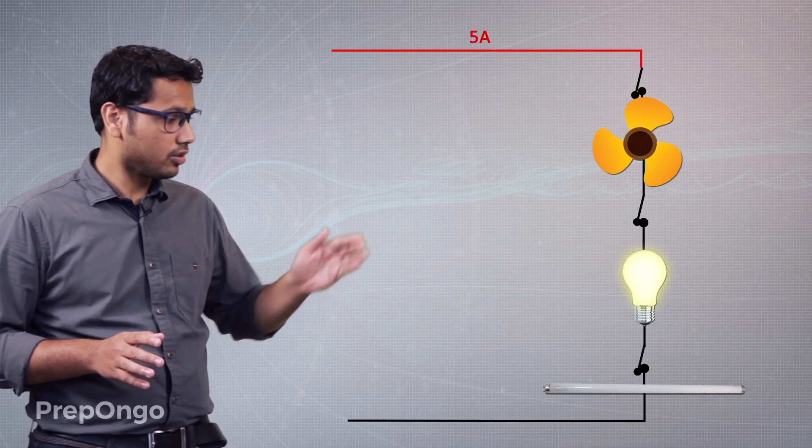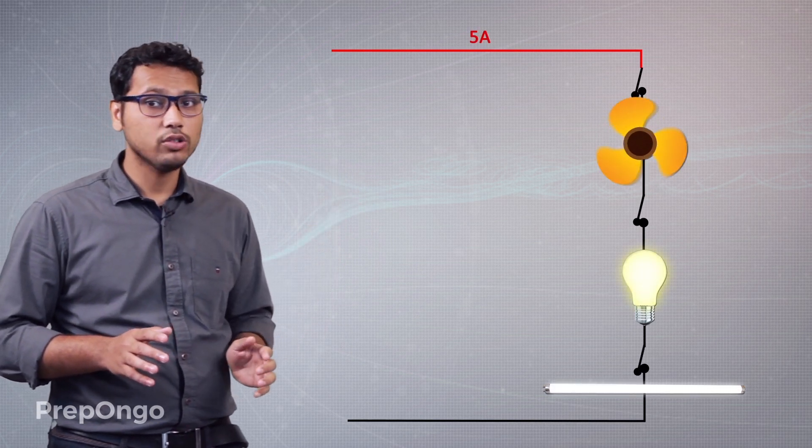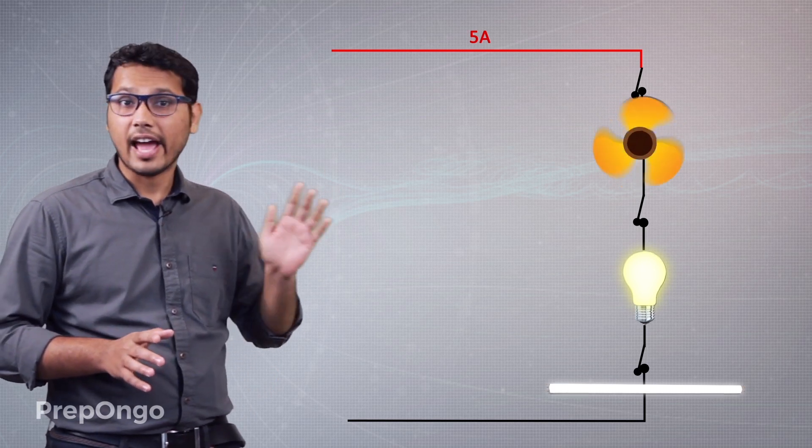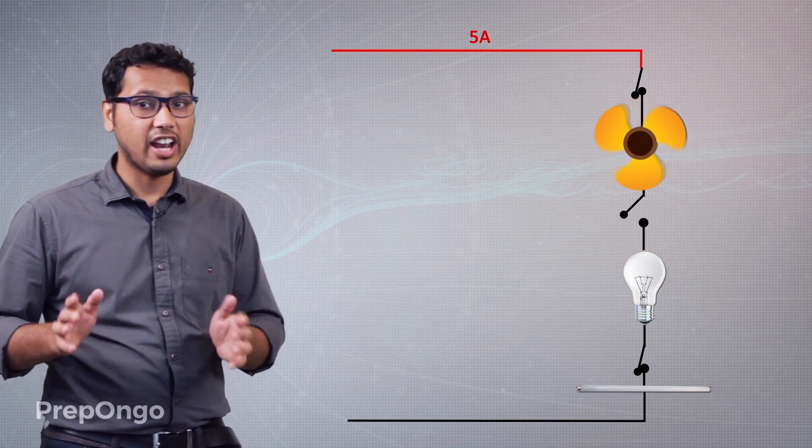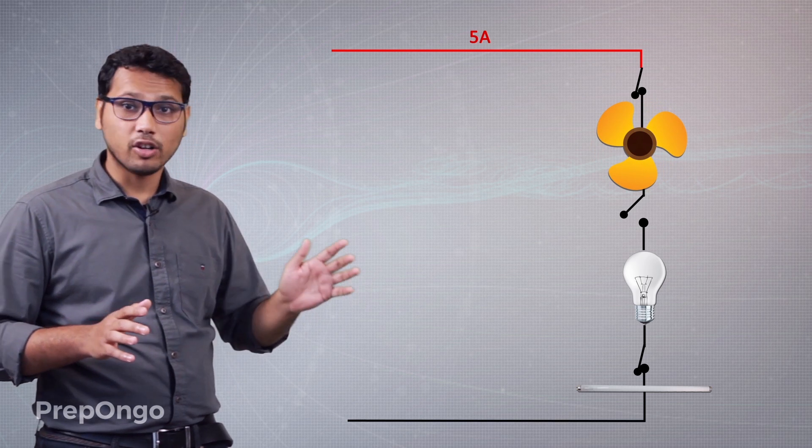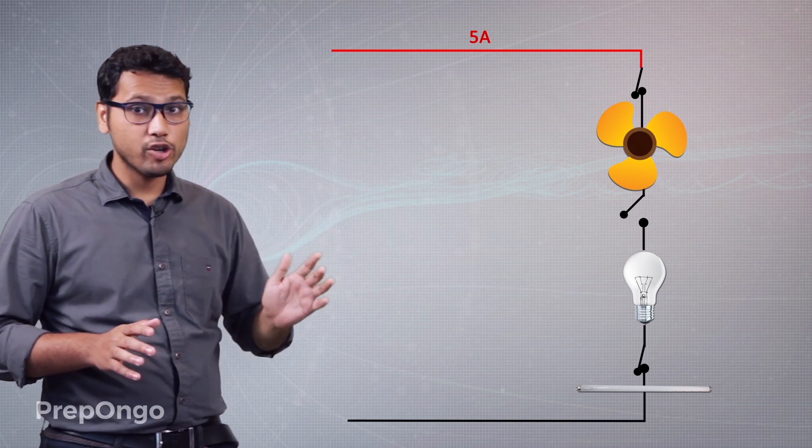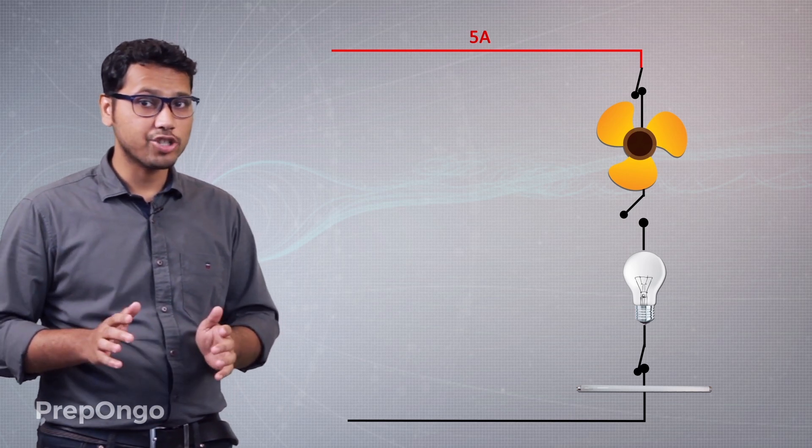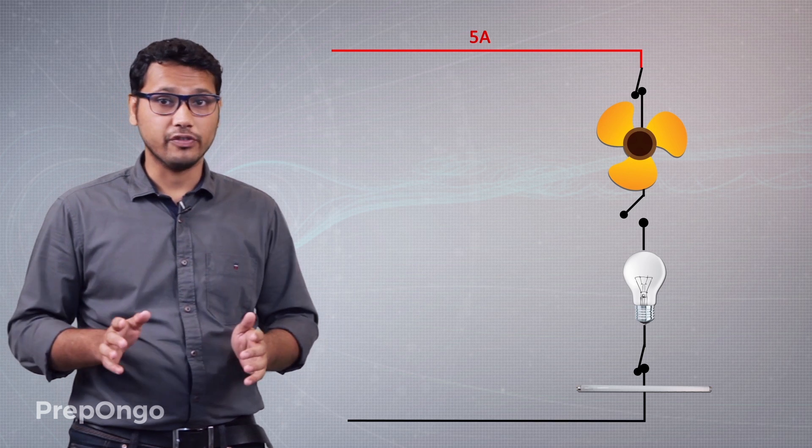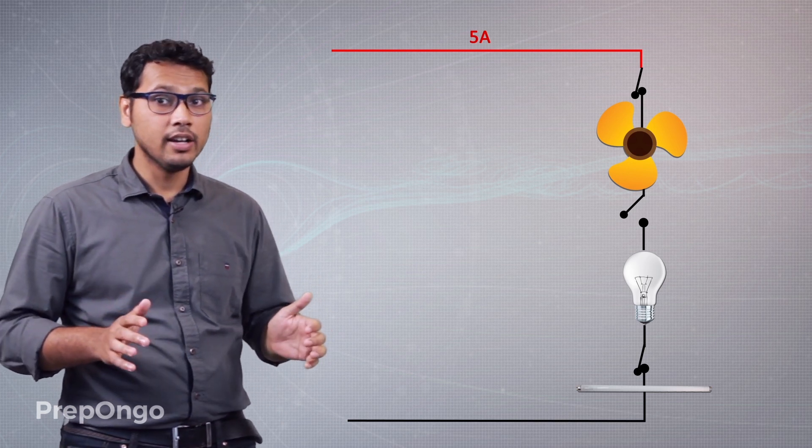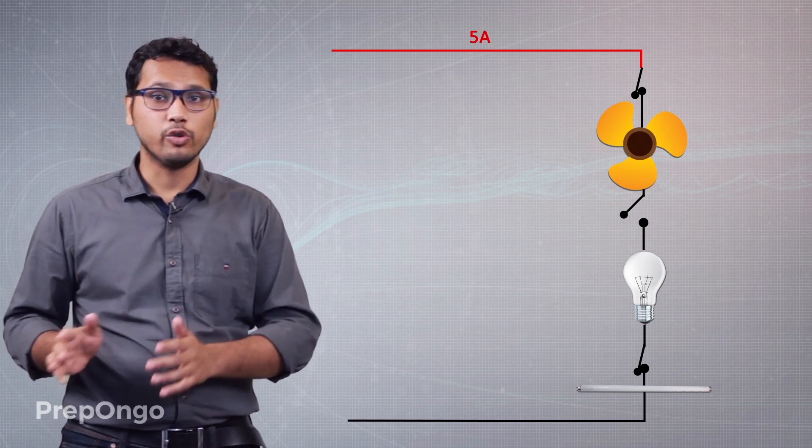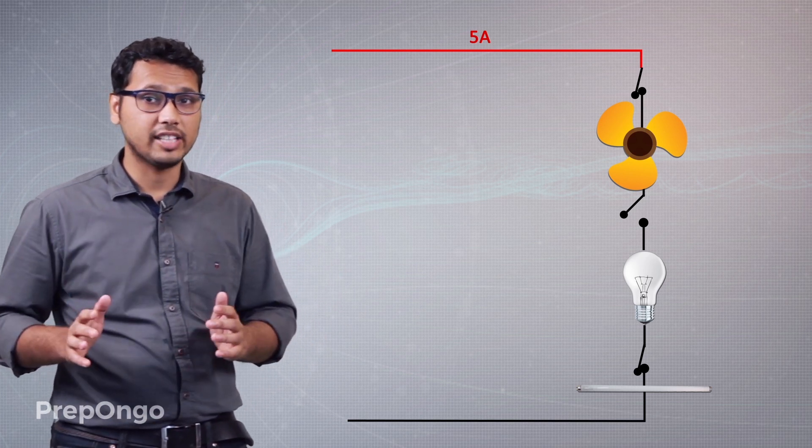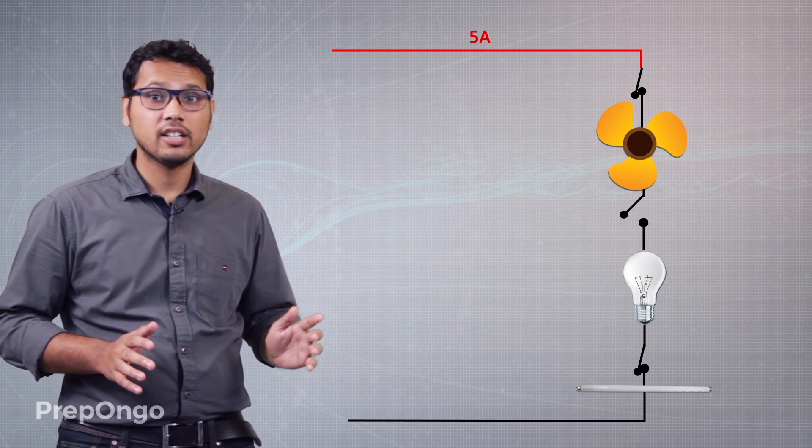So let's assume that we are connecting them in series first. Now let's assume we need the fan and the tube light and we don't need the bulb right now. So let's switch off the bulb. Now what will happen? Since the bulb is not working, the fan and tube light will also not get complete connection and current could not flow through them. So they will also not work. This is the problem with series - if we don't need one appliance then the rest of the appliances also don't work. Or if one appliance gets damaged then the other two appliances cannot work.